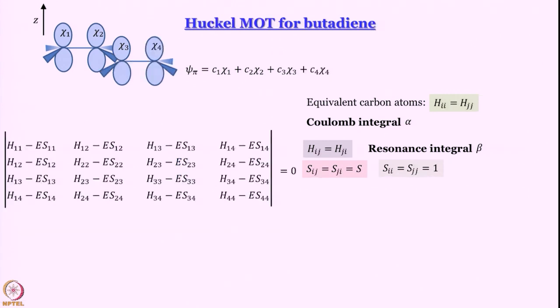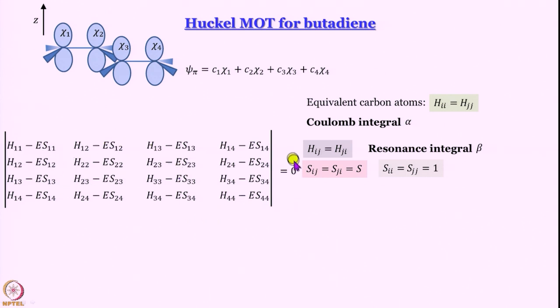Moving to butadiene, we have just added 2 carbon atoms and brought in 2 more p orbitals perpendicular to the molecular plane. Everything remains the same except that the secular determinant becomes larger — earlier we had a 2×2 determinant, now we have a 4×4 determinant. Since the problem is more complicated, we bring in simplifying factors provided by Huckel theory.